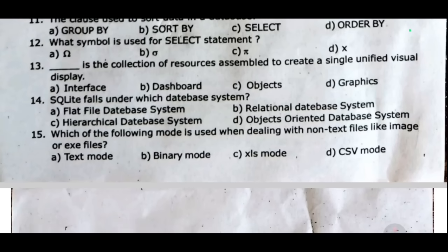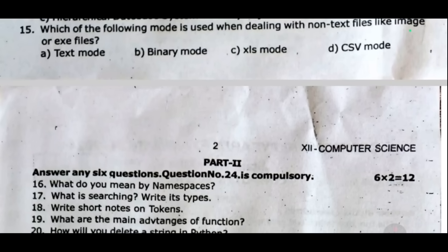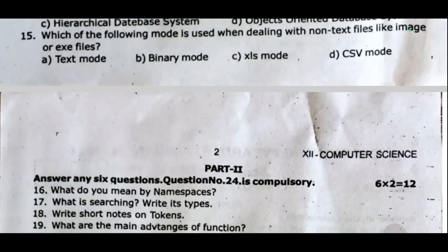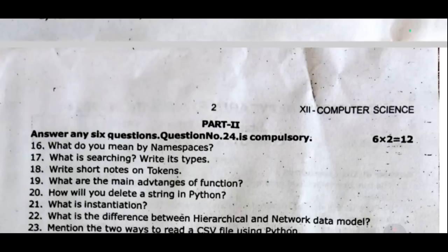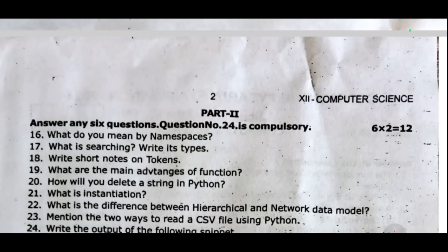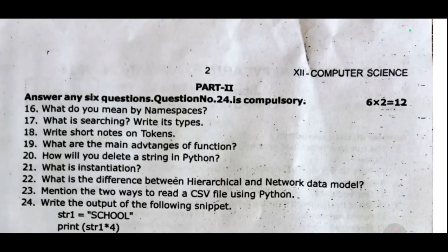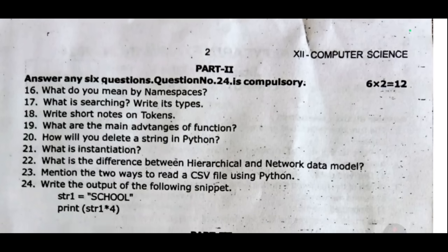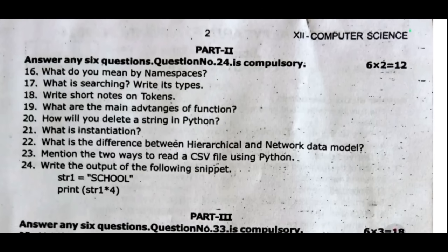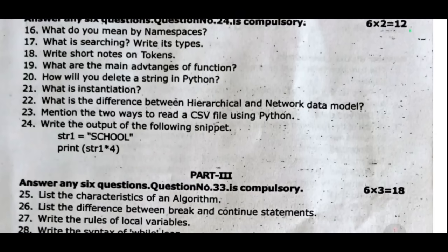Okay students, now checking answers — Part One, one mark choose. Part Two is two marks. Question 16: What do you mean by namespaces? Question 17: What is searching and its types? Question 18: Write short notes on tokens. Question 19: What are the main advantages of functions? Question 20: How will you delete a string in Python? Question 21: What is instantiation? Question 22: What is the difference between hierarchical and network data models? Question 23: Mention two ways to read a CSV file using Python. Question 24: Write the output for the following snippet — string1 equal to 'school', print string1 * 4.